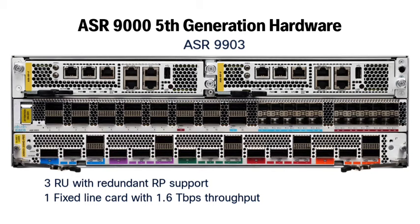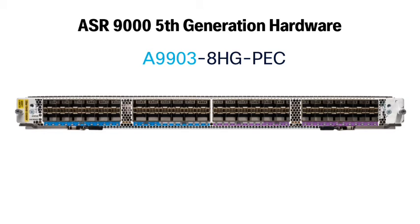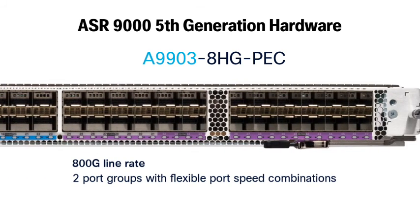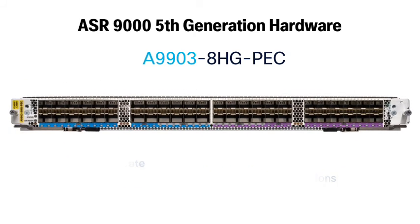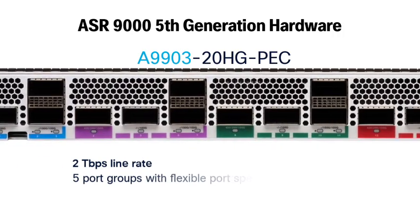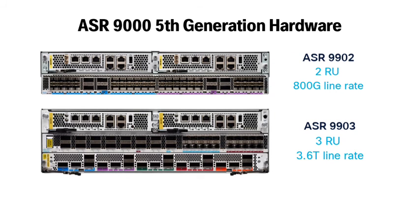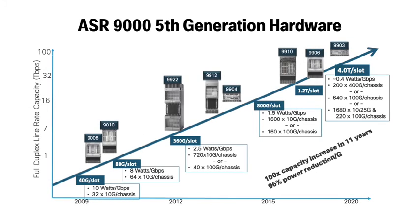The ASR 9903 allows for one pluggable line card or PEC. You have two choices: the A9903-800G or A9903-20x100G PEC. Both of these, along with the fixed line card on the ASR 9903, use the slice architecture so you can configure a variety of port speeds. The ASR 9903 is a 3-rack-unit router and can deliver a maximum throughput of 3.6 terabits per second. In fact, the ASR9000 portfolio has roughly 100x the throughput supported from the first generation silicon to this latest fifth generation silicon, while continuously reducing power usage. Thank you for watching and don't forget to leave your comments below.